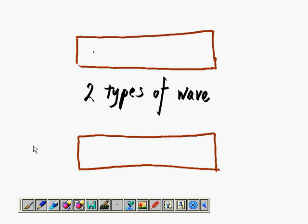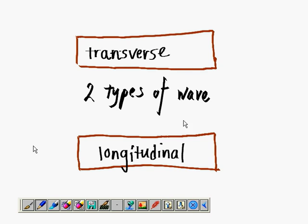So basically, we have two types of Wave. The first wave, first type is Transverse Wave, another type is Longitudinal Wave.